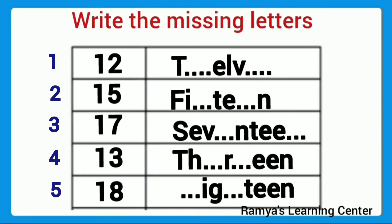Next, write the missing letters. Numbers are given and some letters are missing — we need to fill them in. First number is 12: T-W-E-L-V-E, the last letter is E. Next number is 15: spell 15 — F-I-F-T-E-E-N — and write the missing letters.